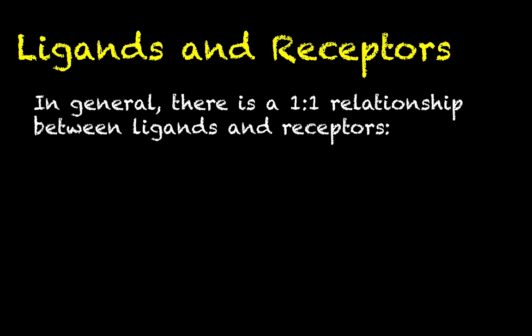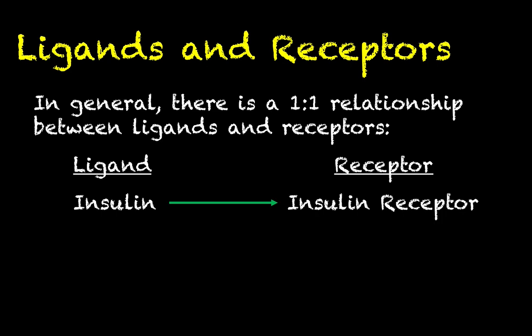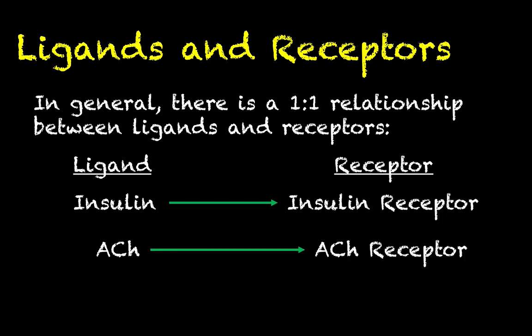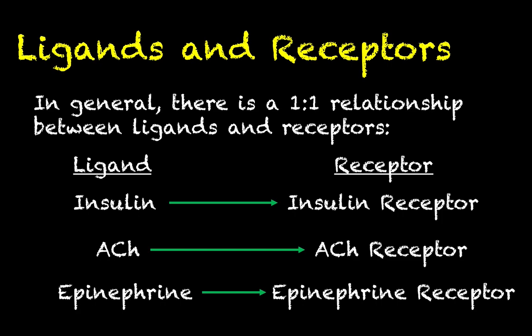So far we've had a couple of videos to really introduce ourselves to the relationship between ligands and the receptors that they bind to. What we've seen is that in general there seems to be a one-to-one relationship between ligands and receptors. For example, insulin binds to the insulin receptor and in general nothing else, acetylcholine will bind to an acetylcholine receptor, and epinephrine will bind to an epinephrine receptor. So each type of ligand has one particular kind of receptor that it will bind to, and there is a great deal of specificity between a ligand and its receptor.